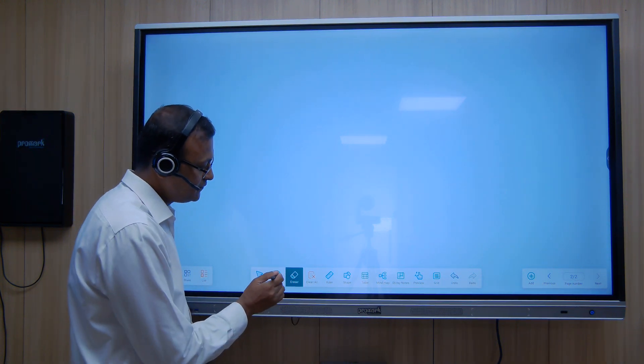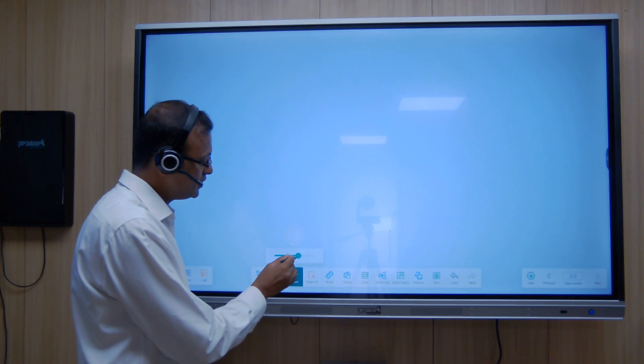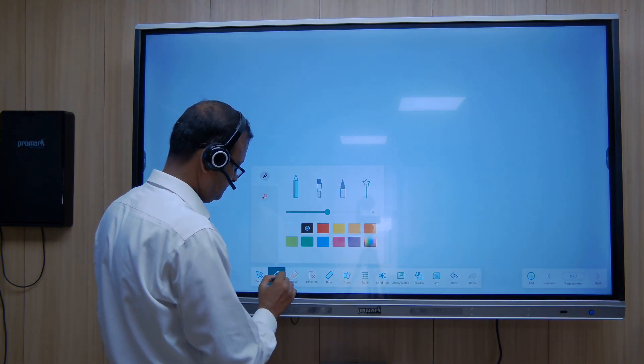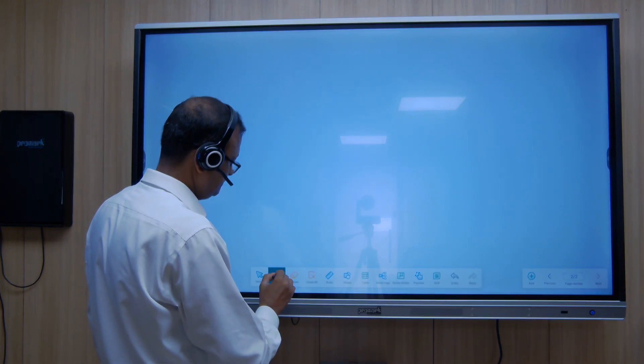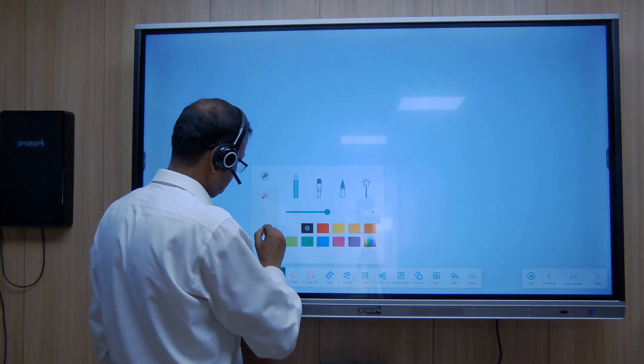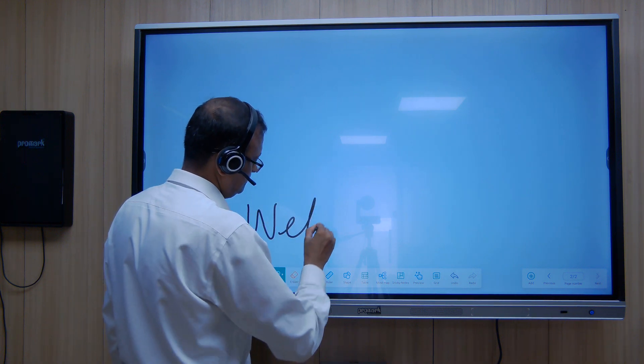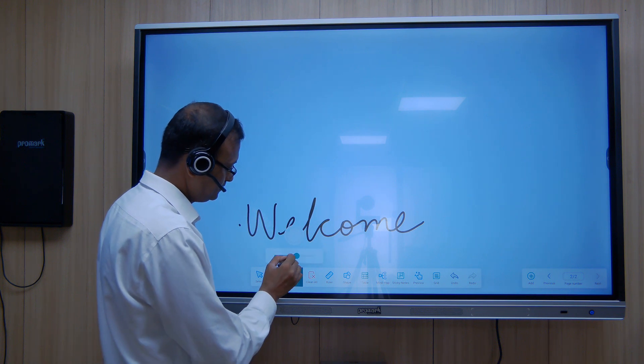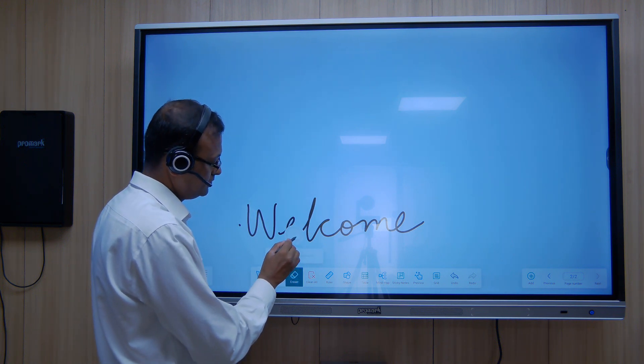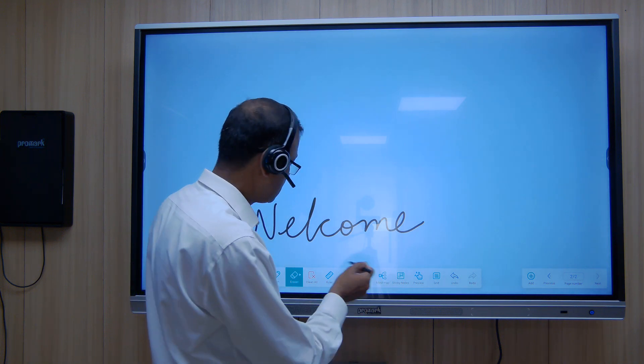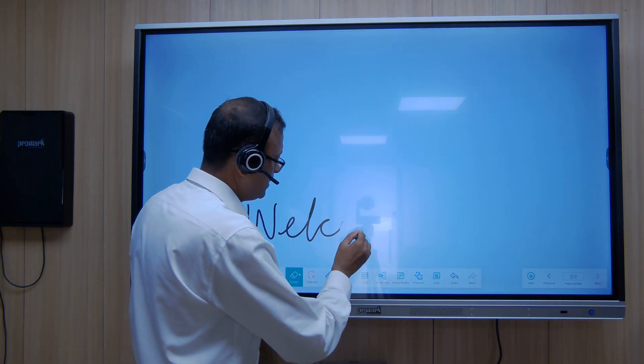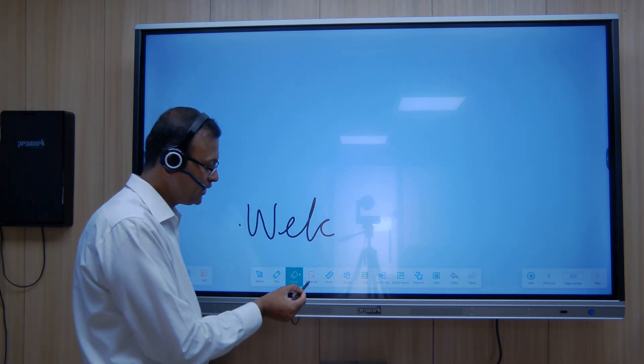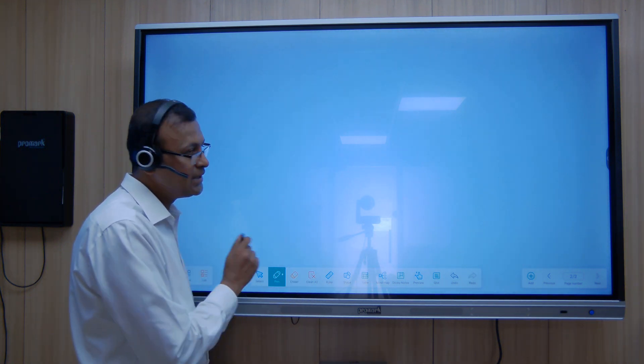This is the eraser function whereby I can choose the thickness of the eraser whatever I want. If I want to erase pixel by pixel I can use this. But if I want to erase the entire page we have this function called clean, with which we can erase the entire board.